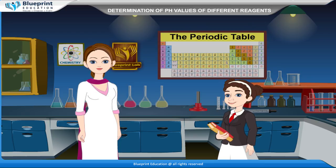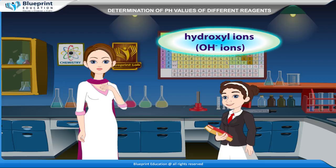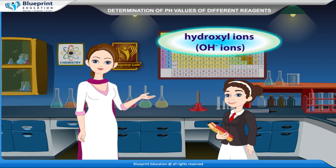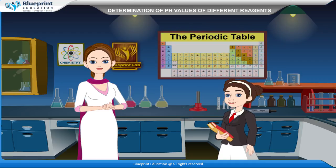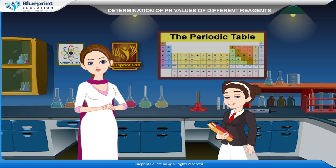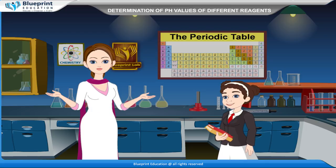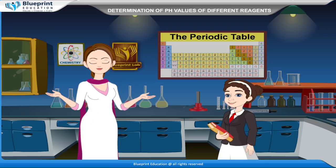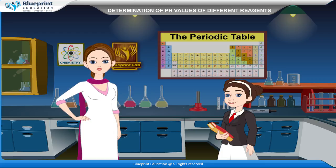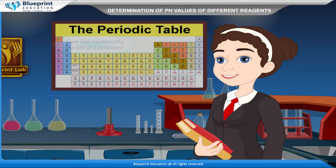Bases are substances that produce hydroxyl ions — OH⁻ ions — when dissolved in water. Acidic solutions are rich in hydrogen ions, and basic solutions are poor in hydrogen ions.